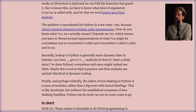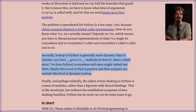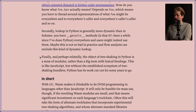Secondly, lookup in Python is generally more dynamic than in Scheme. Since Python's dynamic, we don't have any idea what it needs almost ever. Finally, the object of tree shaking in Python is a mess of modules rather than a big term with lexical bindings. This is like JavaScript, but without the established ecosystem of tree-shaking bundlers - Python has its work cut out for some years to go.